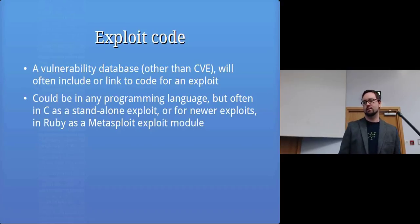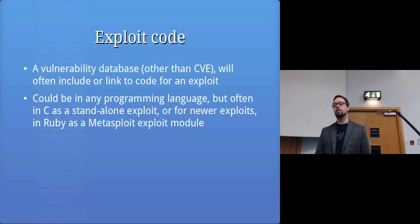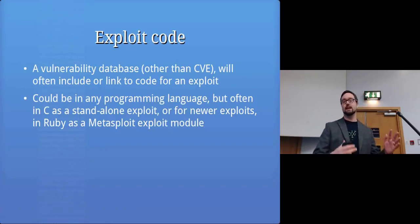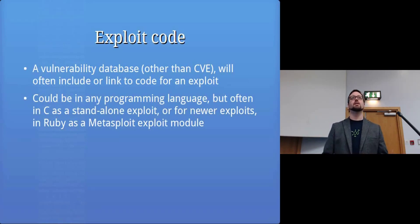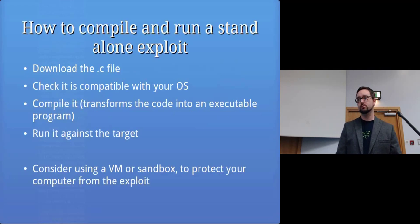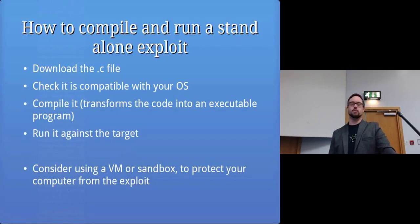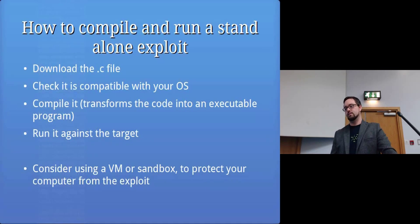A lot of CVE entries will include a link to exploit code, and it can be written in any programming language. Often it's in C as a standalone exploit. All an exploit often does is connect over a network and send some information, so you could do that in any language — but traditionally they were written in C, and nowadays with Metasploit being so popular they're often Metasploit modules written in Ruby. If you have a C file to use, you download it, check it's compatible with your operating system by looking at the headers it uses, then compile it and run it, giving it the information it needs to attack the right computer.